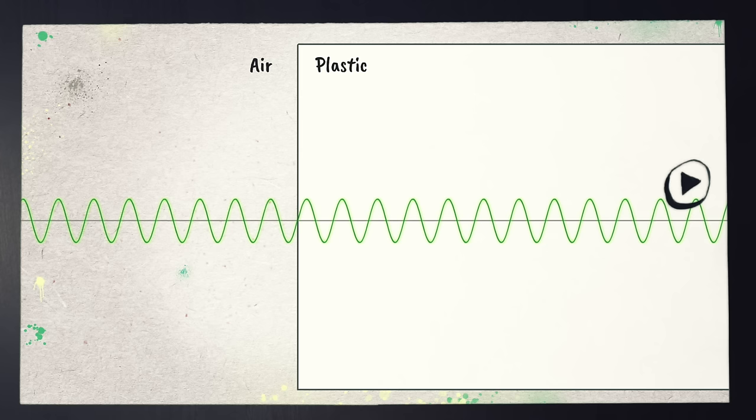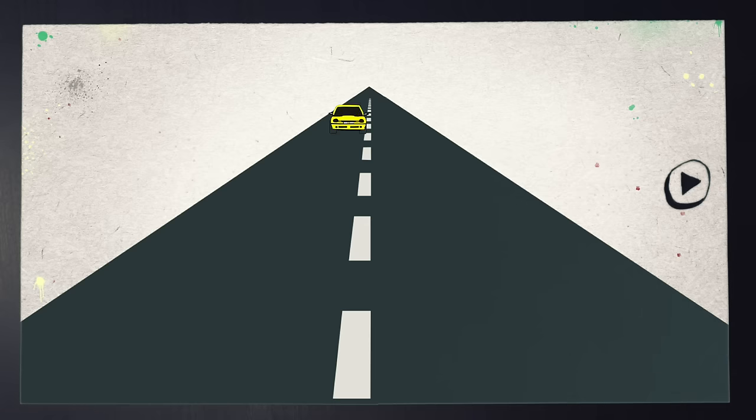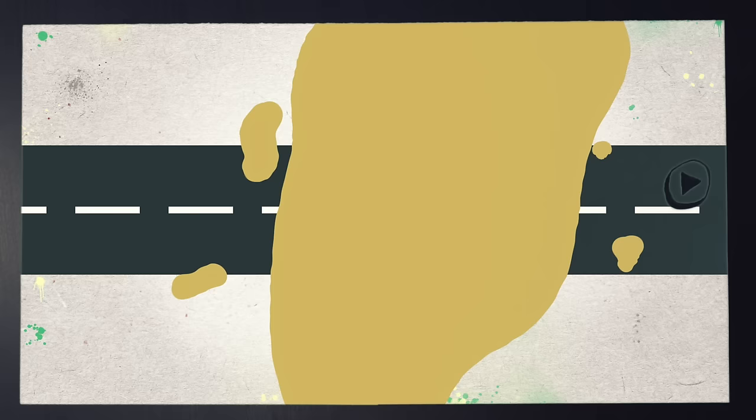To understand why the pen looks weird through water, let's forget about light for a second and picture a car travelling along a road surface, then reaching a patch of sand. Just like the light wave, the car slows down as it reaches a different material.